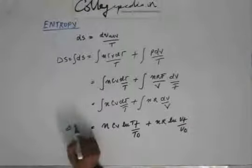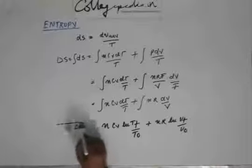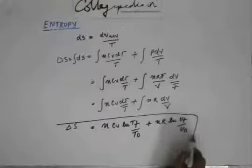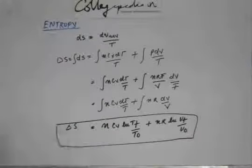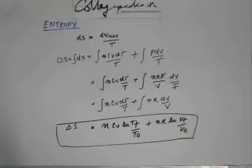So this is the expression for the change in entropy for an ideal gas: ΔS = nCv ln(Tf/Ti) + nR ln(Vf/Vi). This is an important expression and you must remember it.